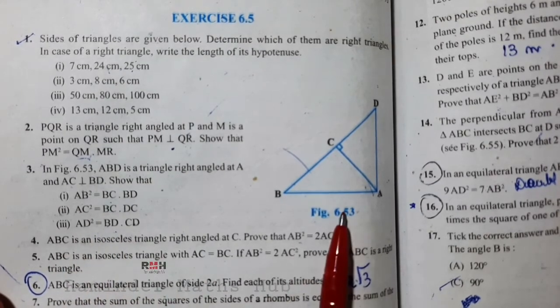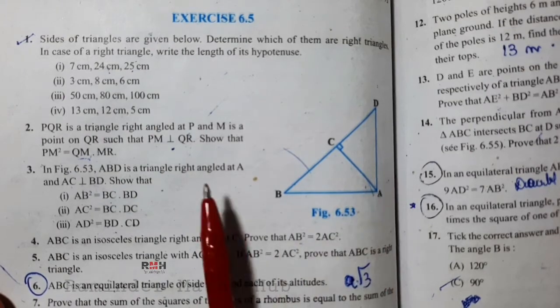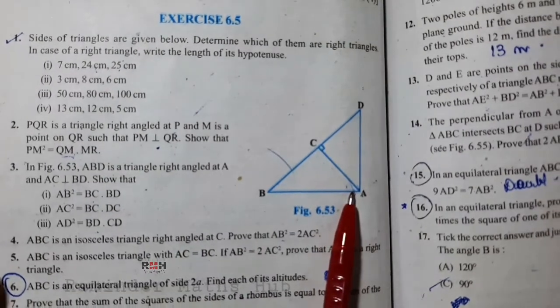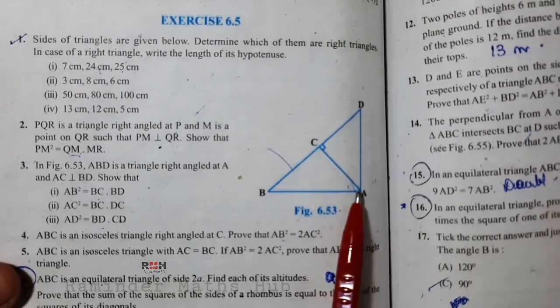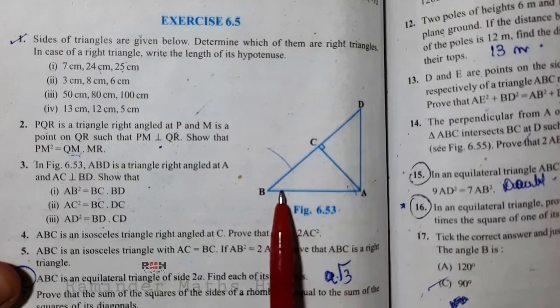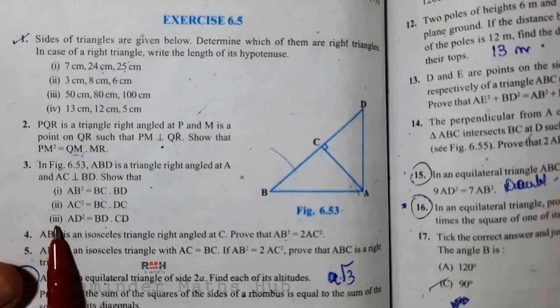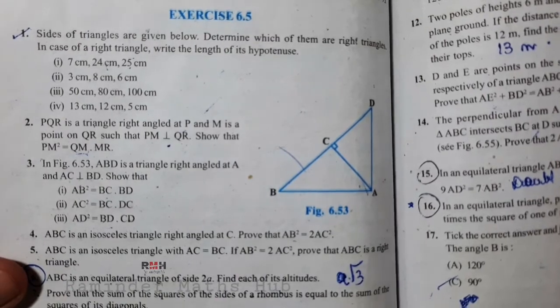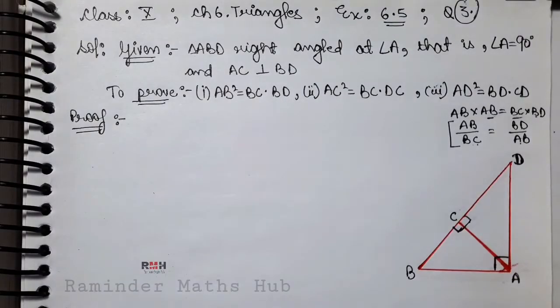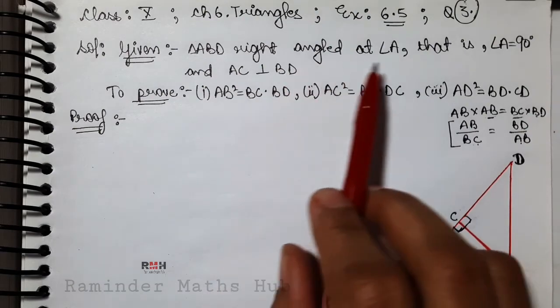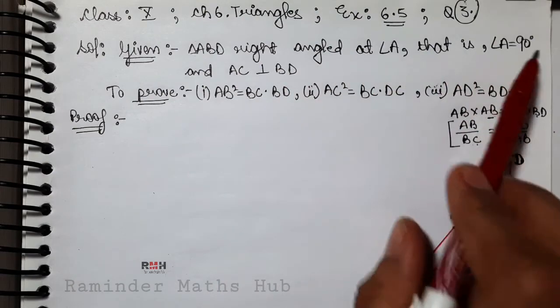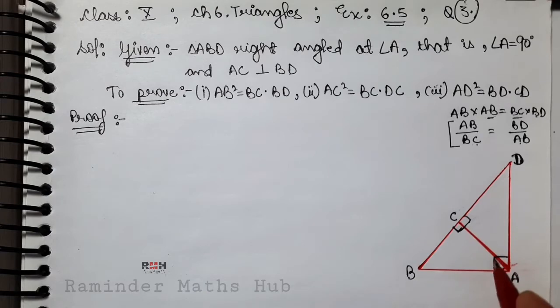हमें figure में ABD triangle given है, जो कि right angled है at angle A, और साथ में given है कि AC, BD के perpendicular है। Given में: ABD is a triangle, right angled at A, means angle A is equal to 90 degree। तो यह angle हमारा 90 degree का है।